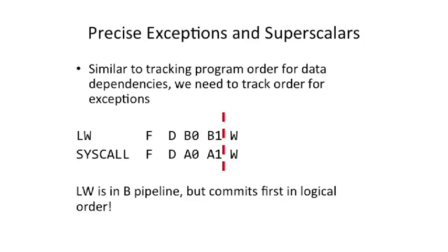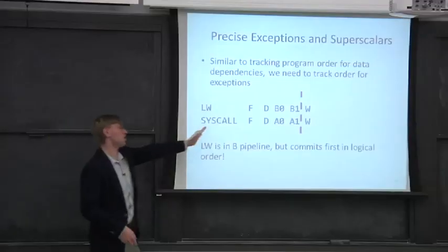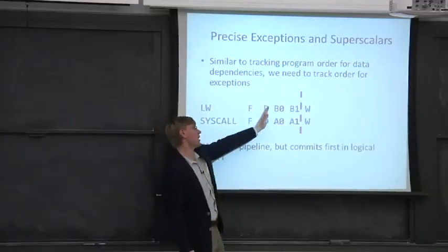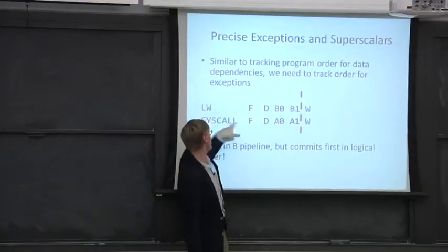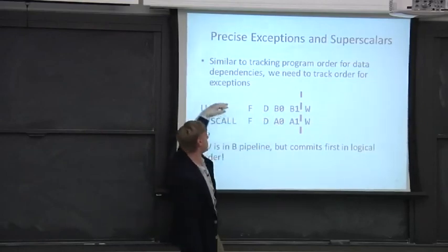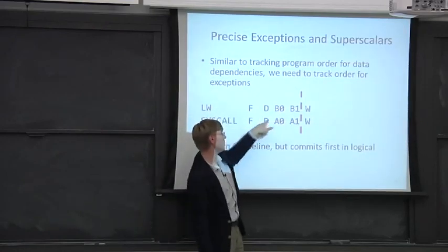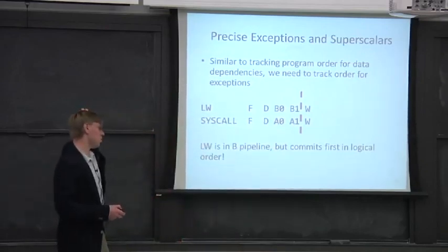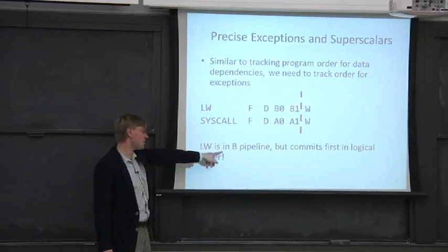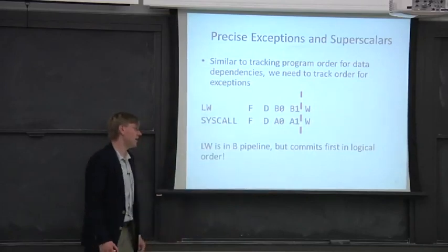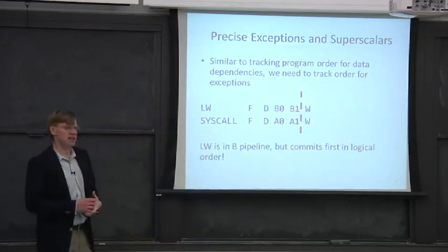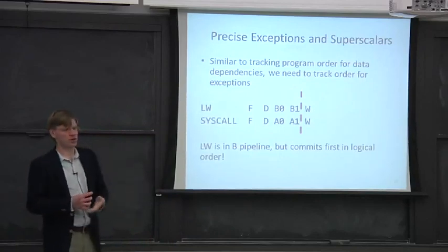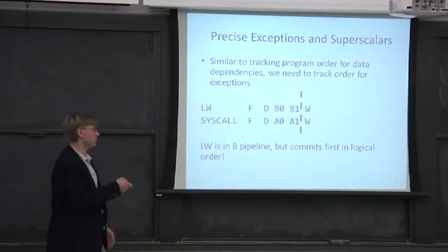One of the interesting questions here is this load word which is going to go down the pipe. If we fetch these two at the same time and they start marching down the pipe, so this is our pipeline diagram, we fetch at the same time, we decode at the same time. The load has to go to the B pipe so it ends up in B and the syscall ends up in the A pipe. What does this exactly mean if the load is in the B pipeline but it takes an interrupt and it commits in order first?